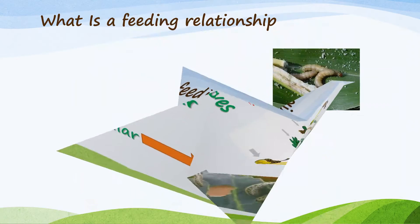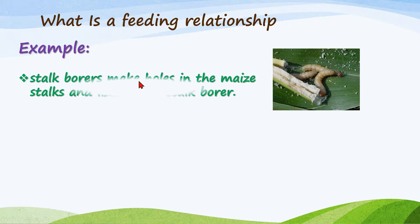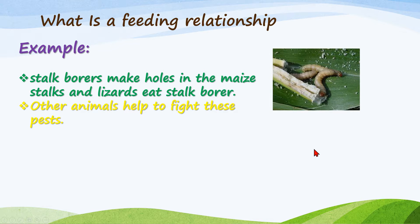Next example: stock borers make holes in maize, and storks and lizards eat stock borers. Stock borers are really dangerous because they destroy your crops — they eat every single thing and nothing is left. In the environment, it is their habitat to eat and live there, and the plant is their habitat.